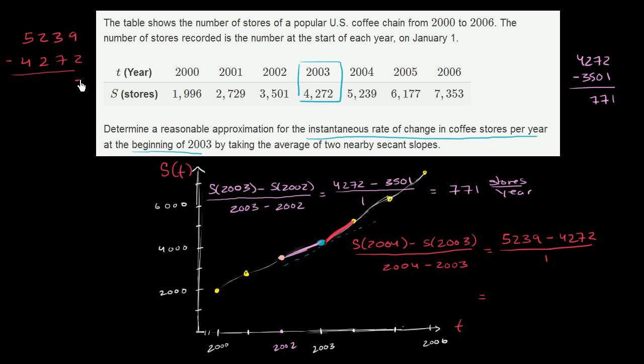So 9 minus 2 is 7. It looks like we're going to have to do a little bit of regrouping here. So let's say we take one of the thousands from the 5,000, so it's 4, and then that becomes 10 hundreds. So this becomes 1,200. And now let's take one of those hundreds and gives it to the 10. So now this becomes 1,100. And we give that 10, so then this becomes 13. We took 100 from here, and that gave us 10 tens. So now we're ready to subtract. 13 minus 7 is 6. 11 minus 2 is 9. And then 4 minus 4 is 0. So it's 967. So this is equal to 967 stores per year.